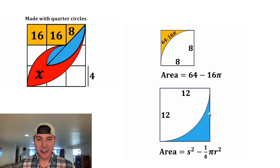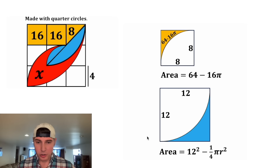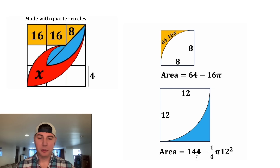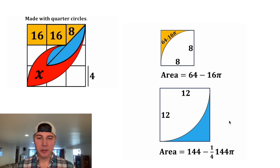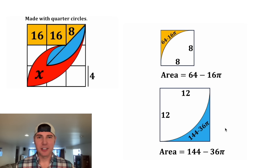Now let's find the area of this region. The side length of this square is equal to 12, and the radius of this quarter circle is also equal to 12. 12 squared is equal to 144. One-fourth of 144 is equal to 36. So the area of this blue region is equal to 144 minus 36π. Let's make that one orange.